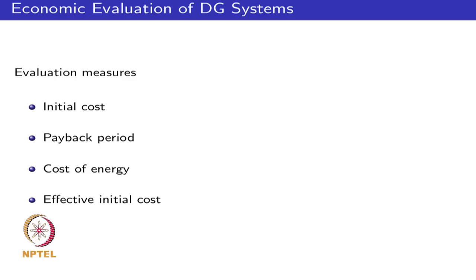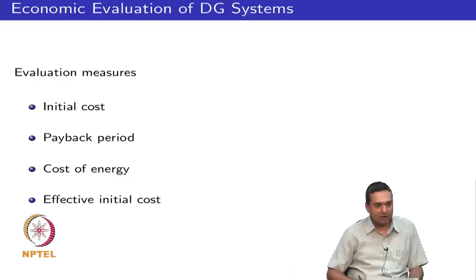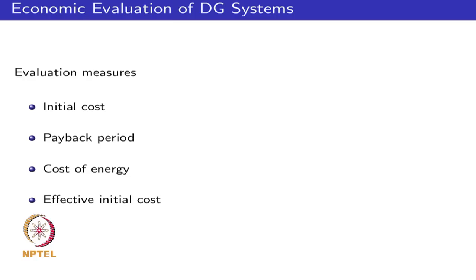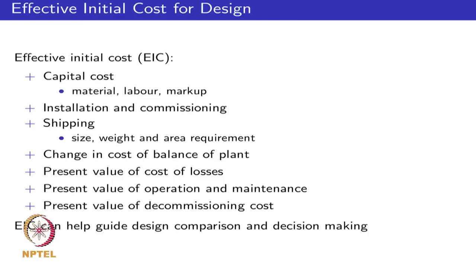We will start looking at effective initial cost. One advantage is that as a power electronic designer, we may not know the entire system being assembled. We might know only the power electronic part of the subsystem and would like to make a design decision based on a portion of the system that may not be 100 percent clear when the overall DG system is being built. The effective initial cost is a way of summing different costs, some upfront and some occurring later in time.